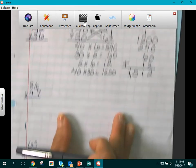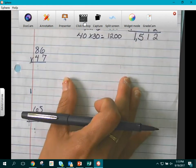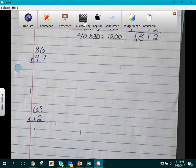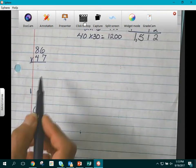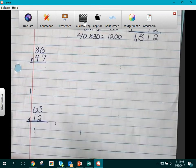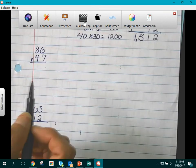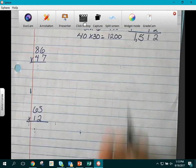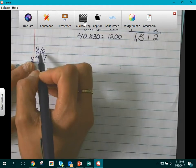We will do another one from their homework. 86 times 47. Again, we are not working with just numbers. We are working with values of these numbers. What each number is worth in their place values that they are in. So we are going to break up 86.